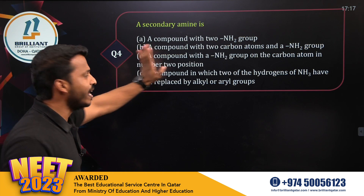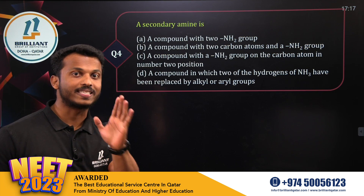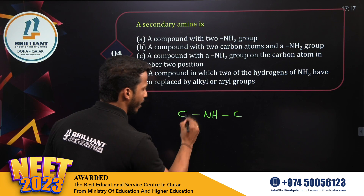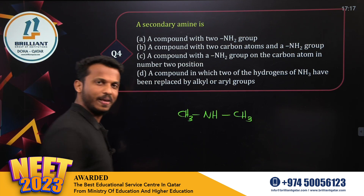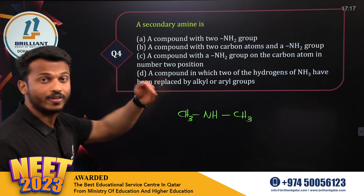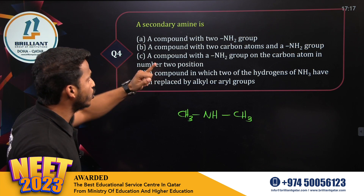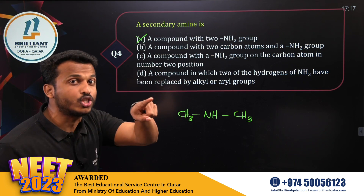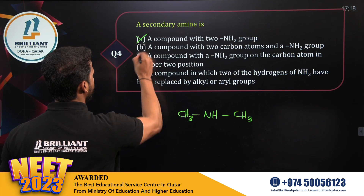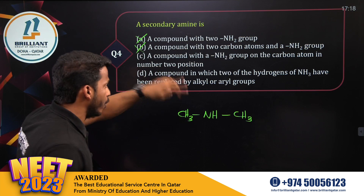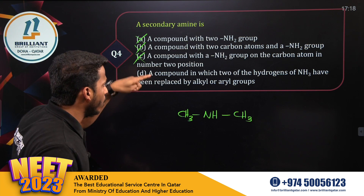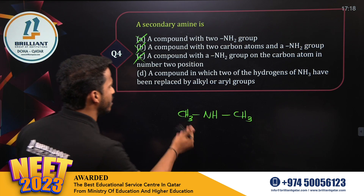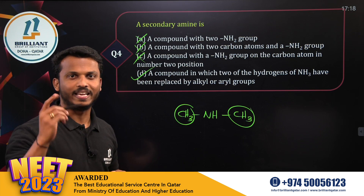Question number four — a secondary amine is: I told you it contains an NH group connected to two carbons, for example CH₃–NH–CH₃. The correct definition is: a compound in which two of the hydrogens of NH₃ have been removed and replaced by two alkyl groups. Option D is correct.